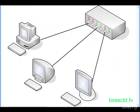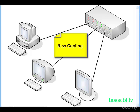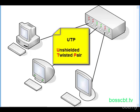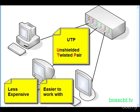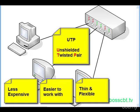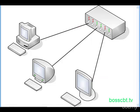Here we have our 10Base-T local area network. 10Base-T addressed a bunch of issues we struggled with in the 10Base-2 and 10Base-5 specifications. First, we have new cabling. Whereas we used coax cable — both thin-net and thick-net — in 10Base-2 and 5, here we use UTP cabling, or unshielded twisted pair. This is less expensive than coax, much easier to work with and install — it's thinner, more pliable and flexible. UTP is made up of up to eight small copper wires inside. We have a separate tutorial on UTP, so we'll just mention it briefly here.